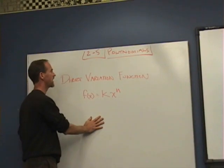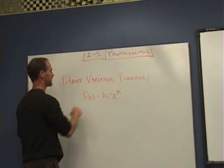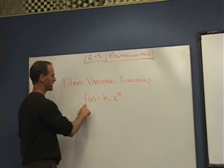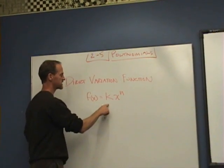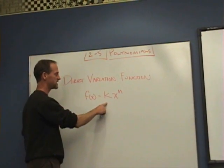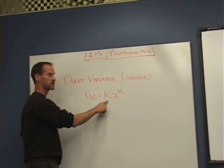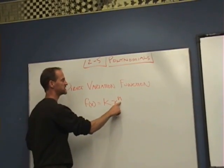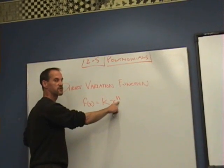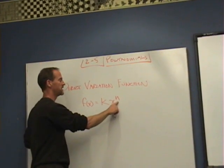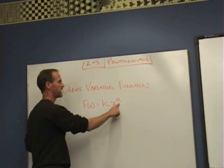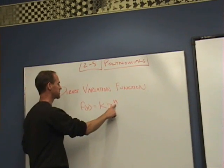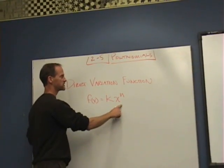Direct variation functions are the type where f(x) = kx^n. k is our constant of variation that can be any number from very small to very large - it could be pi, it could be a whole number. x is our variable and n is an integer like 2, 3, 7, 100, but not negative and not a fraction. So that's an integer exponent - that's a direct variation function.